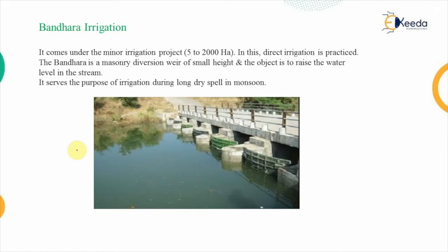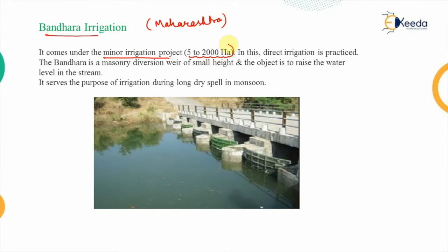The second conventional method of irrigation is Bandara irrigation, which is practiced in the regions of Maharashtra. It comes under the minor irrigation project, meaning the area under the irrigation project is between five to two thousand hectares.